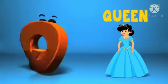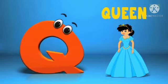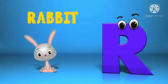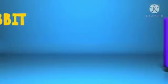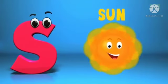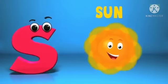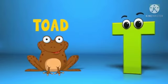Q is for Queen, Q, Q, Queen. R is for Rabbit, R, R, Rabbit. S is for Sun, S, S, Sun. T is for Toad, T, T, Toad.